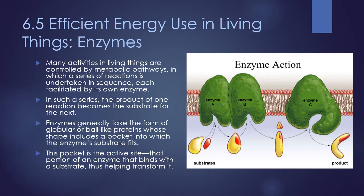Enzymes normally take the form of a globular or ball-like protein, and they tend to have a pocket into which the substrates fit. The shape of that pocket matches the substrate — so a substrate that is the wrong shape won't fit into that enzyme, but substrates with the correct matching shape will fit. This pocket is called the active site — it's the portion of an enzyme that binds with a substrate, helping to transform it.